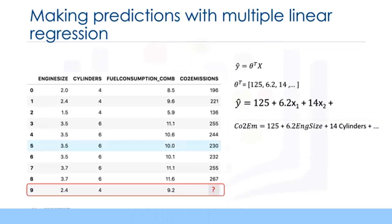As you can see, multiple linear regression estimates the relative importance of predictors. For example, it shows cylinder has higher impact on CO2 emission amounts in comparison with engine size. Now let's plug in the ninth row of our dataset and calculate the CO2 emission for a car with the engine size of 2.4. So CO2 emission equals 125 plus 6.2 times 2.4 plus 14 times 4 and so on. We can predict the CO2 emission for this specific car would be 214.1.